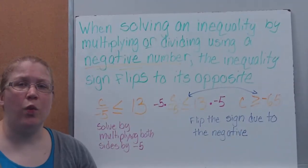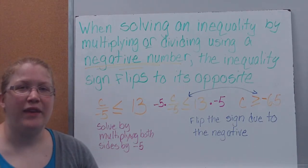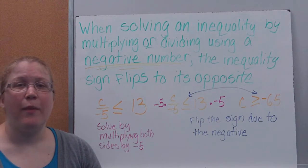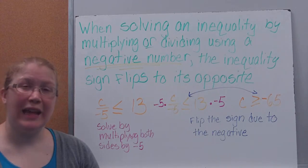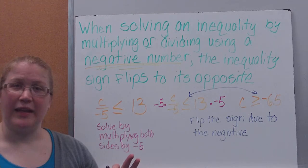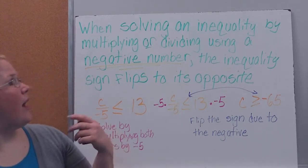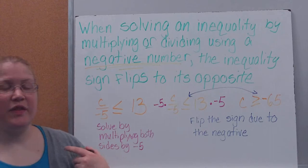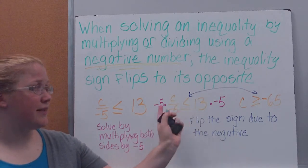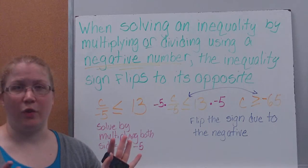Here is our one extra rule. We get a little bit tricky when we have a negative number that we divide or multiply by. If I multiply or divide both sides by a negative number, it does something to my inequality sign — it flip-flops it. Kind of the same way when you multiply a number by a negative, it makes it negative; it does the same thing with our inequality sign and makes it face the other way.